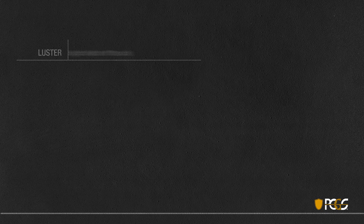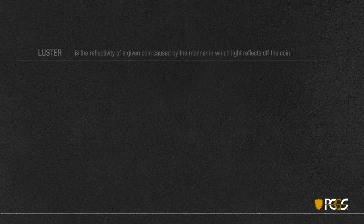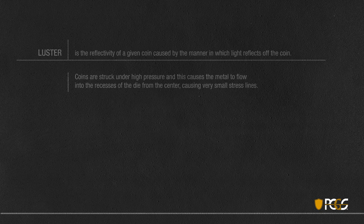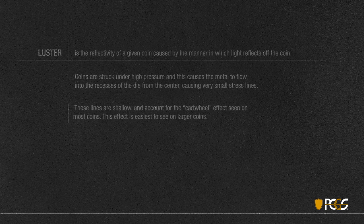So what is luster? Luster is the reflectivity of a given coin, caused by the manner in which light reflects off the surface of the coin. Coins are struck under high pressure, and this causes the metal to flow into the recesses of the die from the center, causing very small stress lines on the surface of the coin.